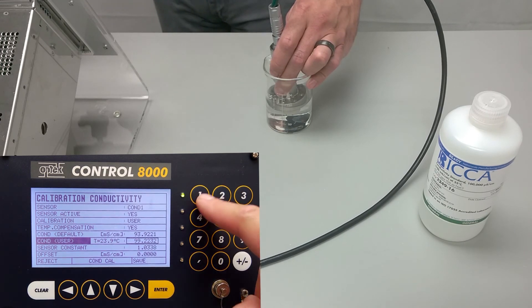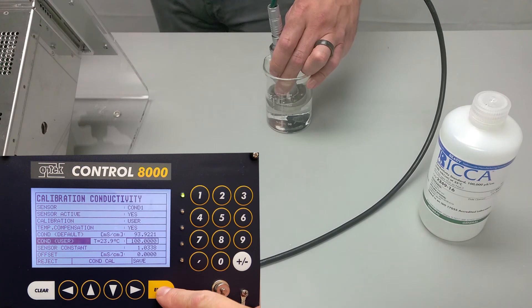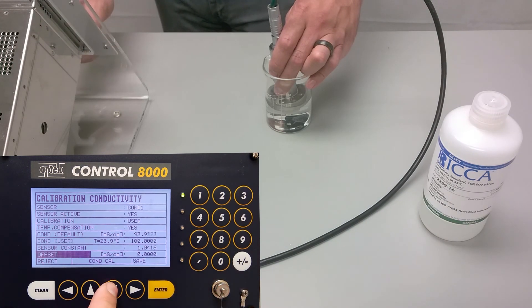Enter our nominal value for our conductivity solution of 100, press enter on that, and then scroll down and save our changes.